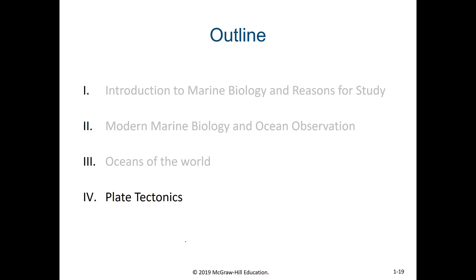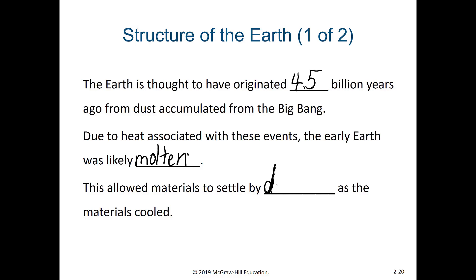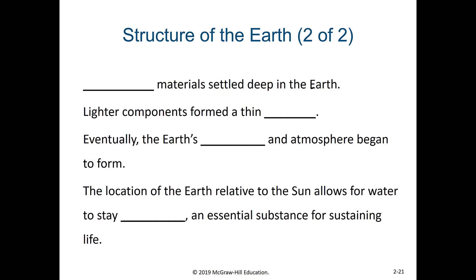Now I'd like to talk a bit about plate tectonics. The Earth is thought to have originated 4.5 billion years ago from dust accumulated from the Big Bang. Due to the heat associated with these events, the early Earth was likely molten. This allowed the materials of the Earth to settle by density as the materials cooled, with the more dense materials settling down into the core — the heavier materials settled deep into the Earth — whereas the lighter components ended up forming a thin crust on top. As that crust cooled, it became solid.